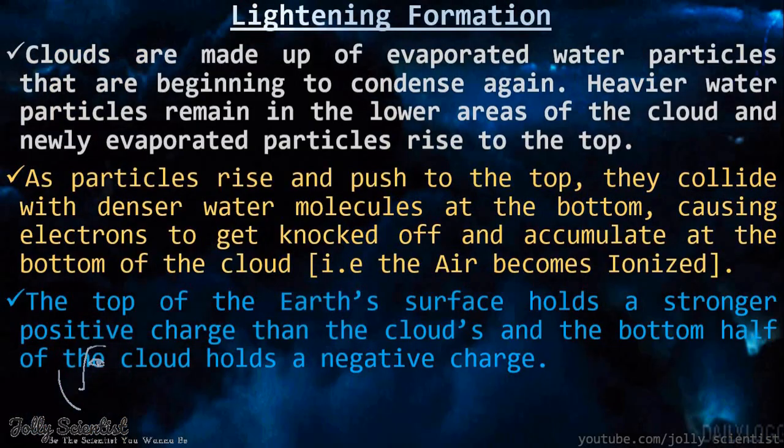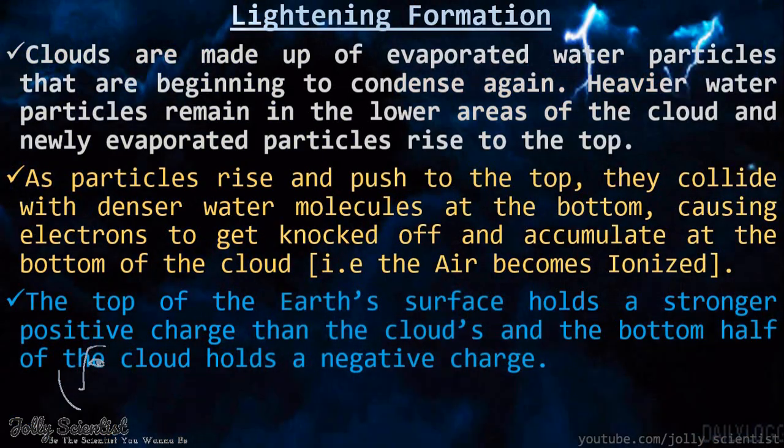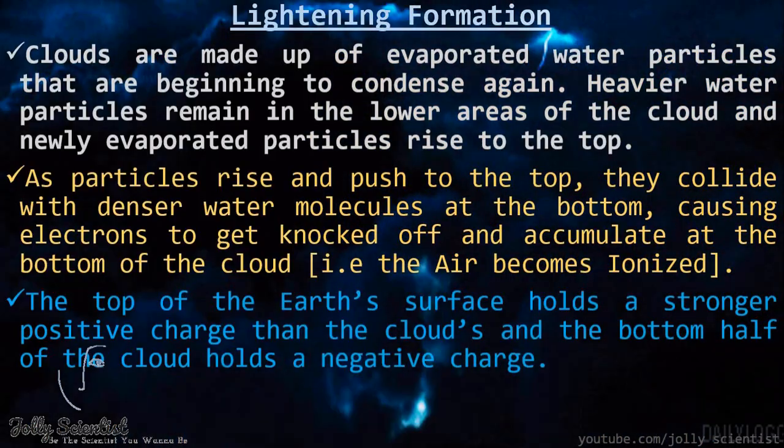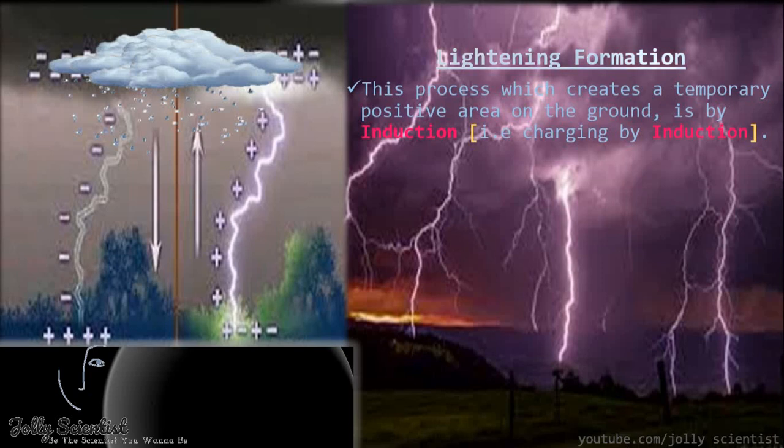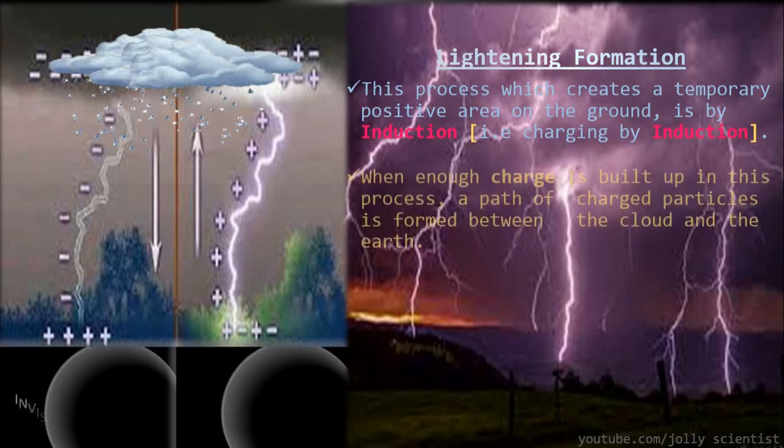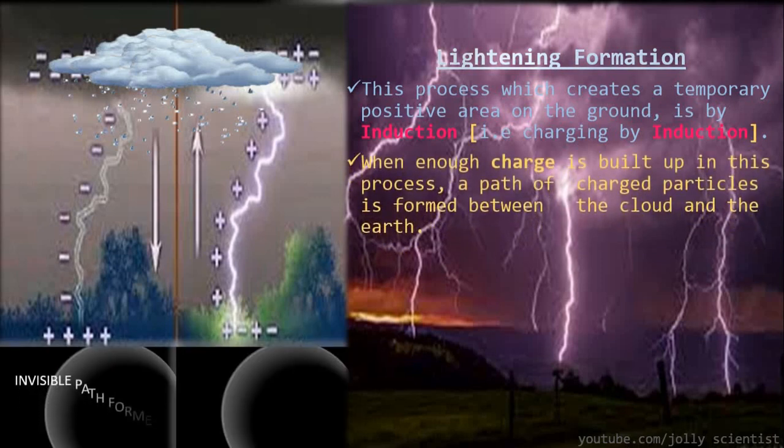The top of the Earth's surface holds a stronger positive charge than the clouds, and the bottom half of the cloud holds a negative charge. A temporary positive area on the ground is created by induction. When enough charge is built up in this process, a path of charged particles is formed between the cloud and the Earth.